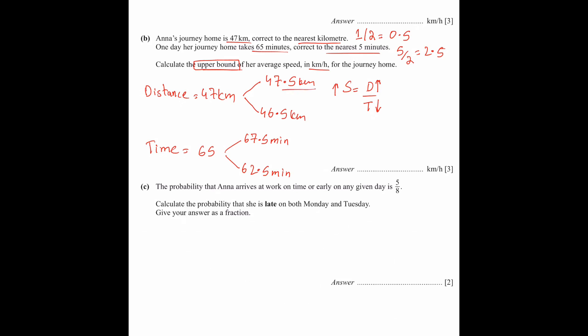So what is the upper bound of distance? Distance upper bound is 47.5. And what do we need to do for time? We need to use lower bound.